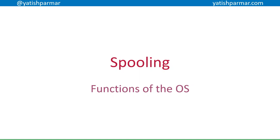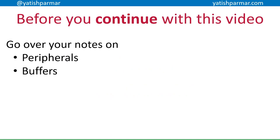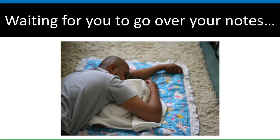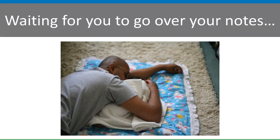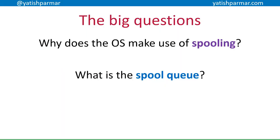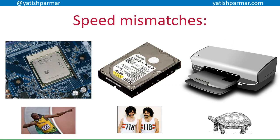Alright, so spooling — a function of the operating system. Make sure you go over your notes on what peripherals are and on memory management in terms of buffers. This video is going to be a quick one, just so you understand basically why the operating system makes use of spooling and what the spool queue is. So we've got a problem here with speed mismatches.